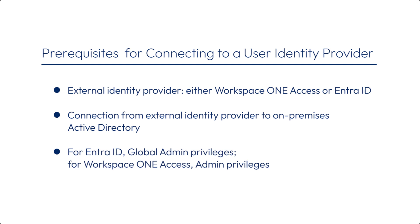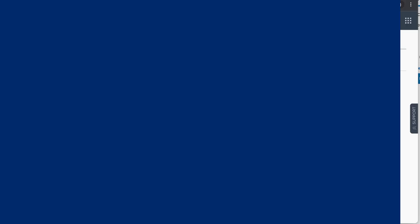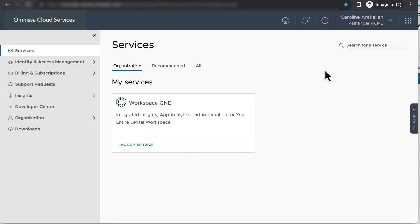For either case, you need to first connect the identity provider to an on-premises Active Directory. For Workspace ONE Access, we showed you how to do this in several of the earlier videos in this series. And you need to be an administrator in Workspace ONE Access, which is what you are if you signed up for a free trial.